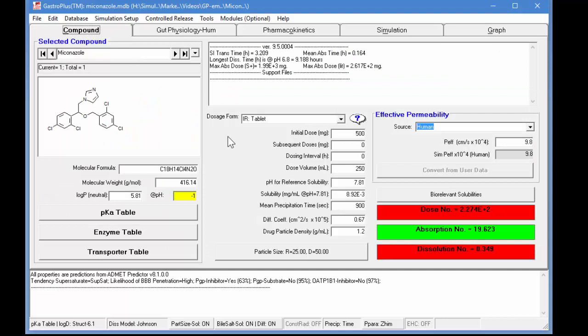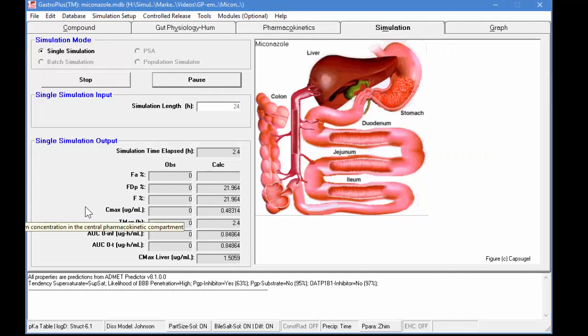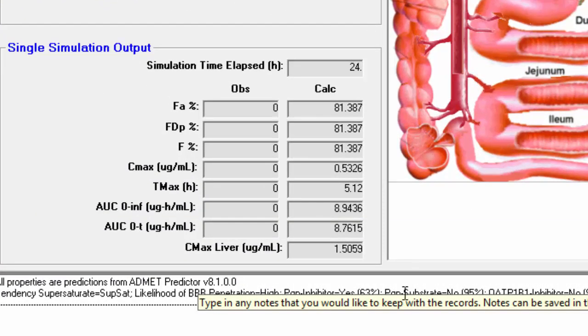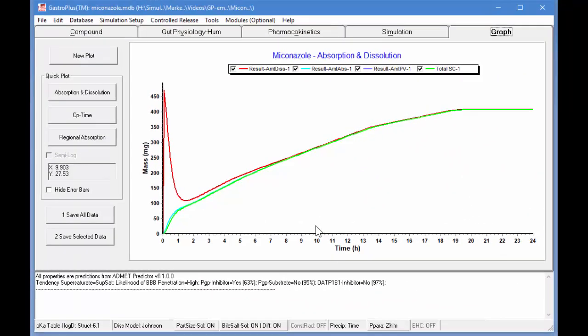Now let's go back into the compound tab and let's change the permeability down to 1.0. That reduces the absorption number but still green. Go into the simulation tab and click on the start button to start the simulation. Now if we look at the fraction absorbed it's only 81 percent and that's due to the lower permeability of the compound. If we look at the graph again you see that now with very low permeability the amount dissolved dips down all the way to 100 milligrams and then slowly rises as the compound is absorbed.